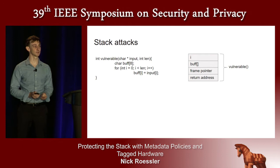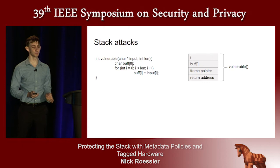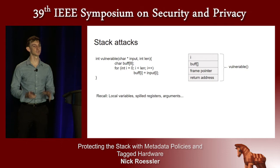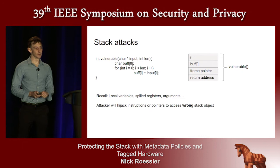To remind you about how a classic stack attack works, let's look at a simple buffer overflow. On the left, I've shown a vulnerable C function and on the right, its corresponding stack frame. Vulnerable copies from the char star input into a local buffer of length eight. If more than eight bytes of input are provided, the program will copy off the end of buff and onto whatever happens to be next in memory, which in this case is a frame pointer and the return address. This allows an attacker to override the return address and hijack control flow. All these other things end up on the stack as well — local variables, spilled registers, arguments — and these can also all be overwritten to mount attacks.